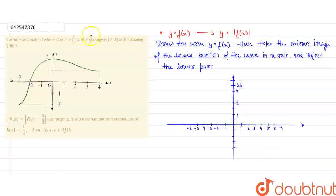Here, we have a question. Consider a function f whose domain is minus 3 to 4. That is, x from minus 3 to 4 and the range means y values. Following the graph, h(x) equals |f(x) minus 3/2| has range e to f and n will be the number of real solutions of h(x) equals 1/4. Then, find the value e plus 2f. We have to find this value.